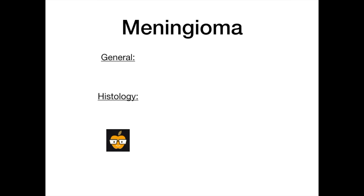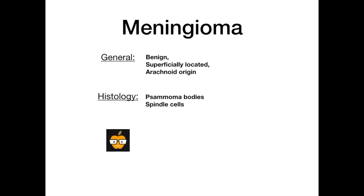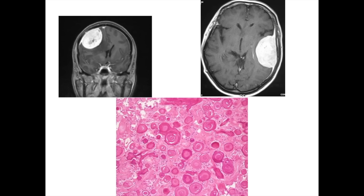Meningiomas are benign and tend to be superficially located because they occur on the meninges, which overlie the superficial aspect of the brain. These are arachnoid in origin. On histology, you'll see psammoma bodies and spindle cells. On CT scan, you can see the tumors are very superficially located because they are extensions of the meninges. Psammoma bodies are unique to just a few tumors in the body and meningiomas are one of them.